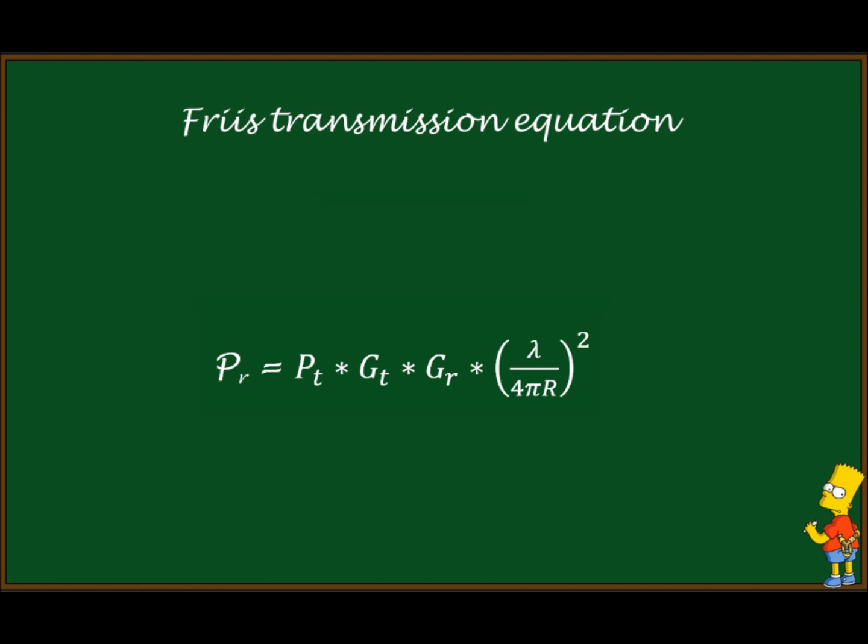And this is the Friis transmission formula. Basically, here we can see that for higher receiving power, you can have higher transmitting power, better antennas with higher gain, lower frequency, or shorter distance.